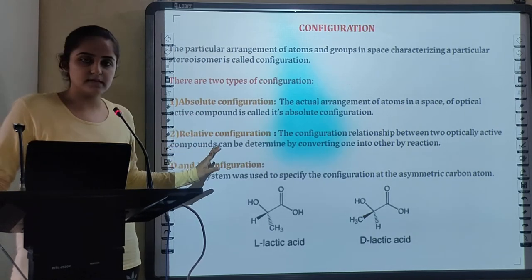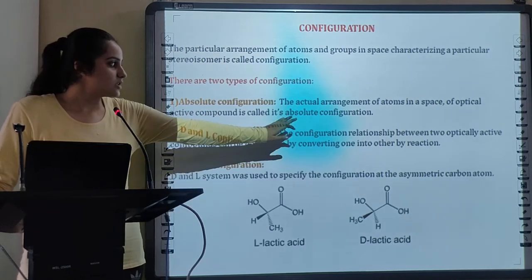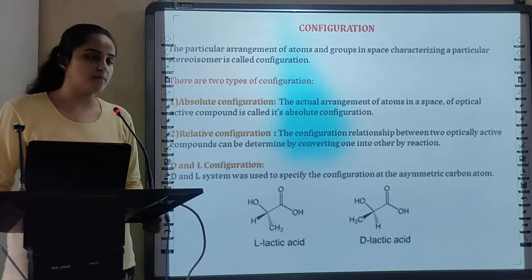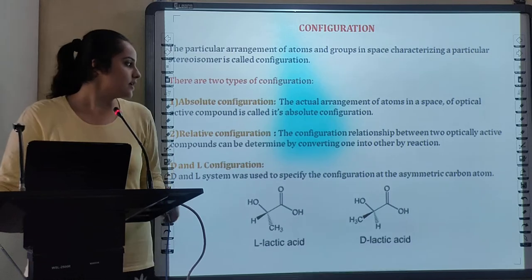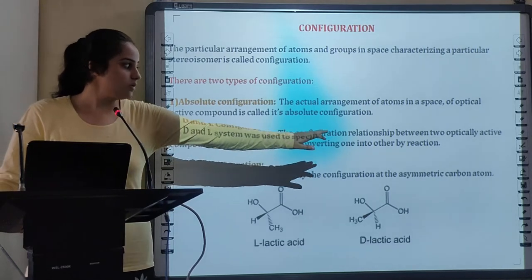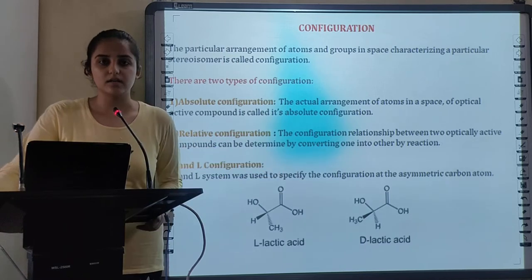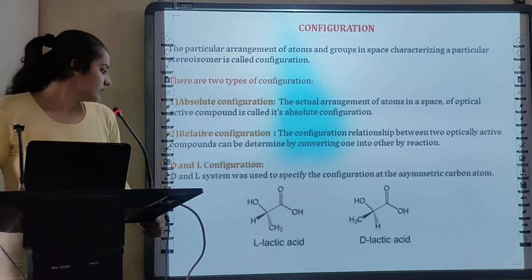The actual arrangement of atoms in space of optically active compound is called Absolute configuration whereas the configuration relationship between 2 optically active compounds can be determined by converting one into another by reaction.